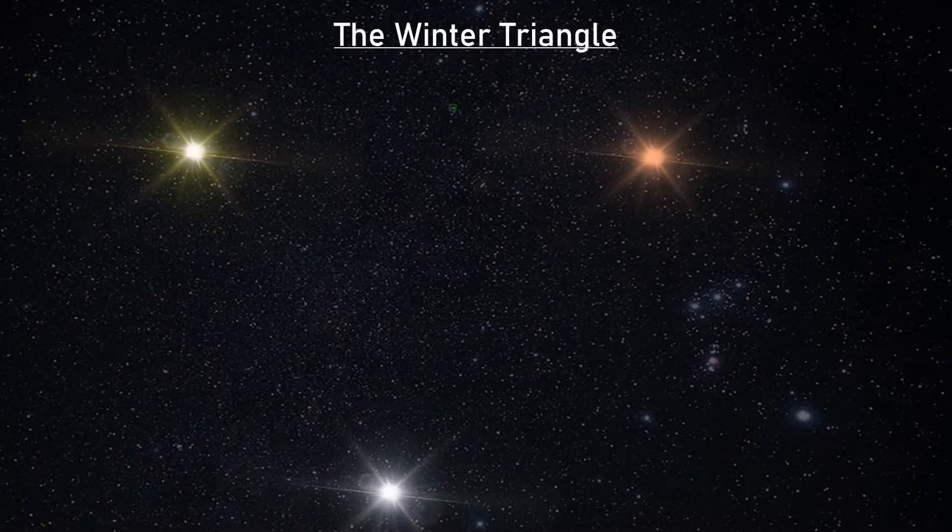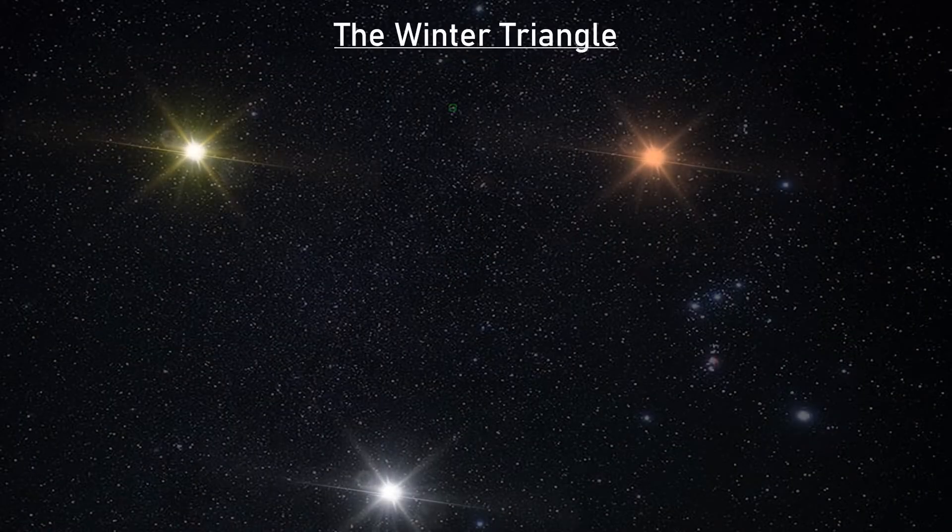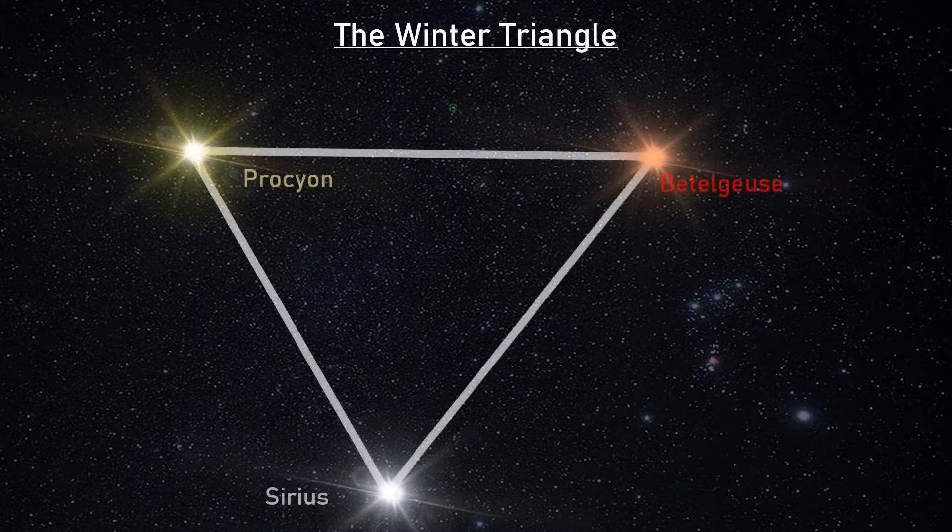Shining with an apparent magnitude of 0.34, the star is very easy to find and forms one of the three corners of the winter triangle alongside Sirius and Betelgeuse.